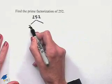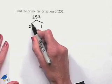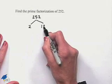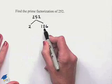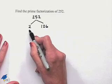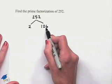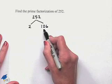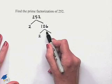2 divides into 252, which goes 126 times. We now note that we can go further with this. The 126 is divisible by 2, and we see that that's going to be 2 times 63.